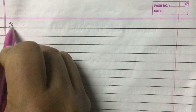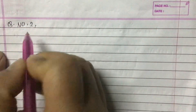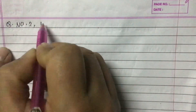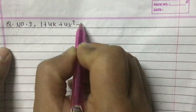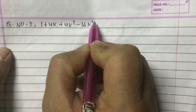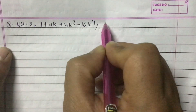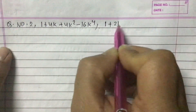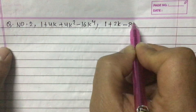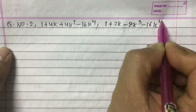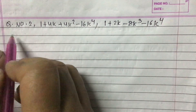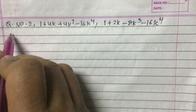Now let's solve question number two. The first expression is 1 + 4k + 4k² - 16k⁴, and the second expression is 1 + 2k - 8k³ - 16k⁴.